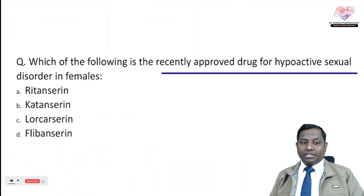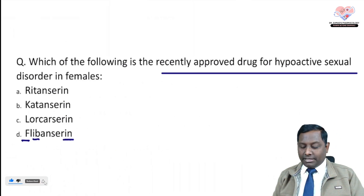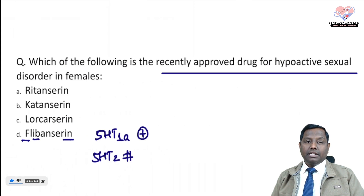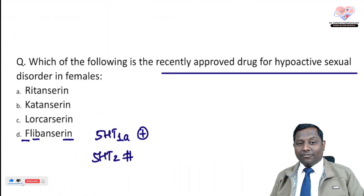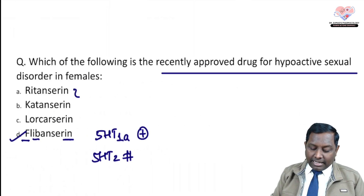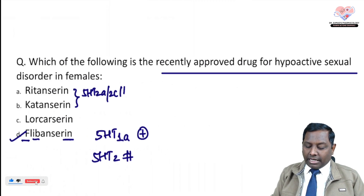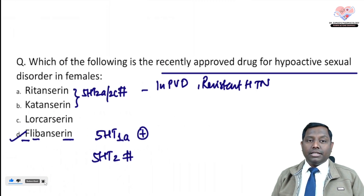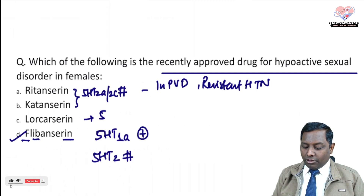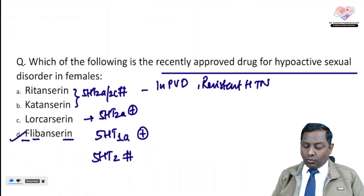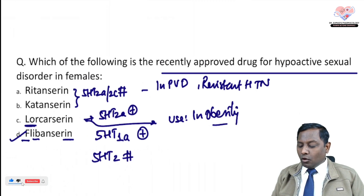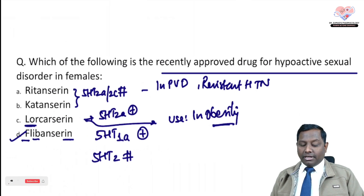The last question: which recently approved drug is used for hypoactive sexual desire disorder in females? The answer is flibanserin. It is a 5-HT1A agonist and 5-HT2A antagonist. Lorcaserin, a 5-HT2A agonist, can be utilized in peripheral vascular diseases and resistant hypertension, and is mainly used in obesity.